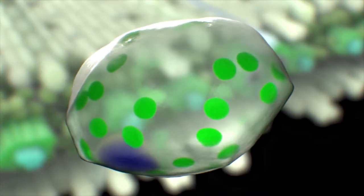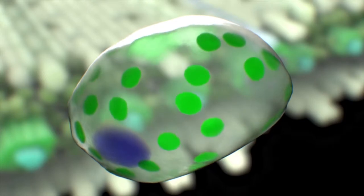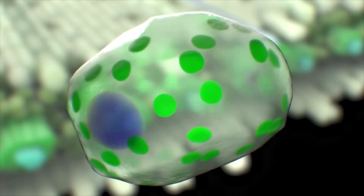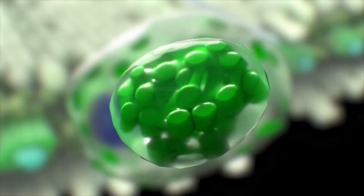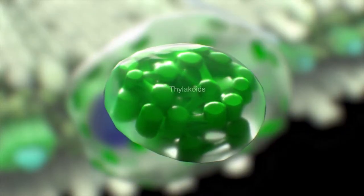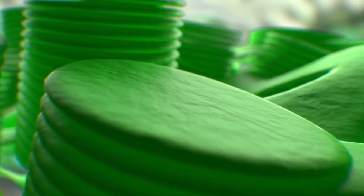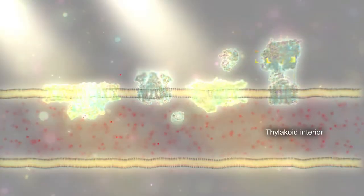Within each mesophyll cell are light gathering organelles called chloroplasts. Thylakoid compartments within chloroplasts are studded with protein complexes that contain chlorophyll, a pigment that absorbs red and blue light and reflects the green color that we associate with photosynthesis.